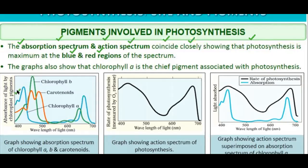Chlorophyll a works at around 400 nm and also at around 700 nm wavelength. Chlorophyll b has its peak between 450 nm and 650 nm. Carotenoids have much less activity in the action and absorption spectrum. The graph shows that the action spectrum of photosynthesis is high at these wavelengths, and green light is not necessary for photosynthesis.